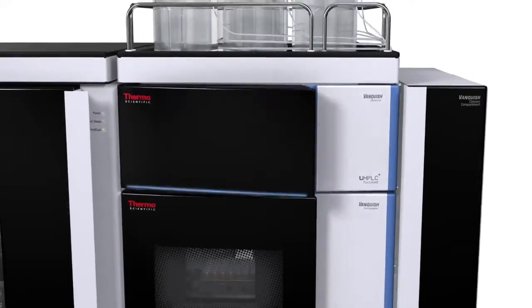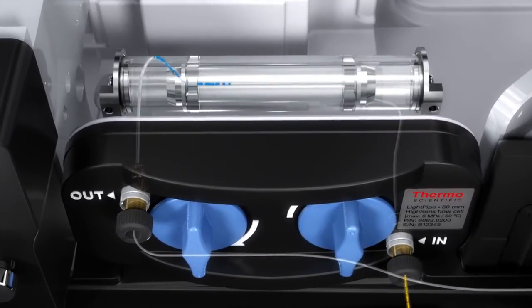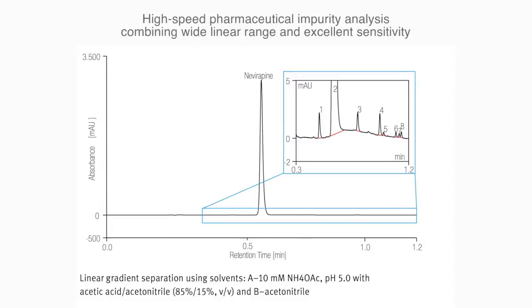The Vanquish system features Thermo Scientific light pipe technology flow cells. The 6cm optical path length and industry-leading signal-to-noise performance will ensure excellent sensitivity. Allowing you to detect, for instance, compounds in impurity profiling experiments.